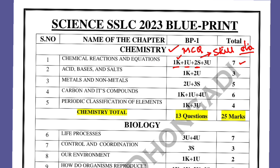So total seven marks you can expect from Chemical Reactions and Equations. For Acids, Bases and Salts: one knowledge-based question and two understanding-based questions — total three marks. Metals and Non-metals: two mark questions and three skill-based, so expect one diagram — total five marks. Carbon Compounds: one MCQ, one understanding, and four mark understanding question — six marks. Periodic Classification of Elements: one MCQ and three understanding questions — total four marks. You can expect a total of 13 questions and 25 marks from the chemistry part.